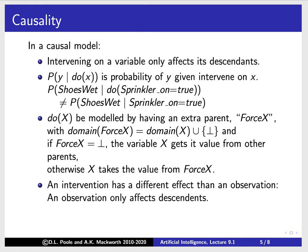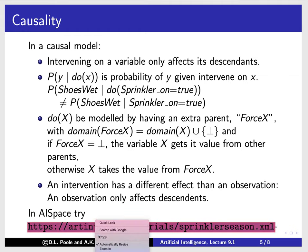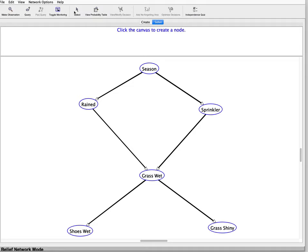An intervention has a different effect than an observation — an intervention only affects descendants. Let's try this in the applet. We'll copy this link and go to the network here. So here's the network. We can put it in solve mode or toggle monitoring to see what happens.